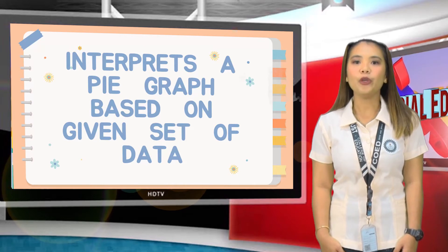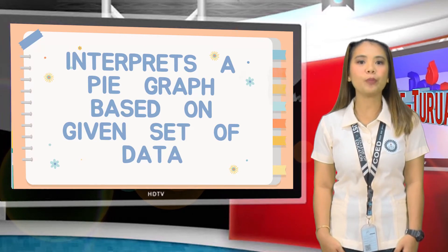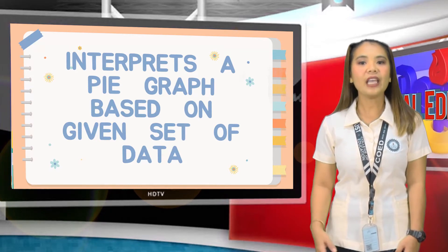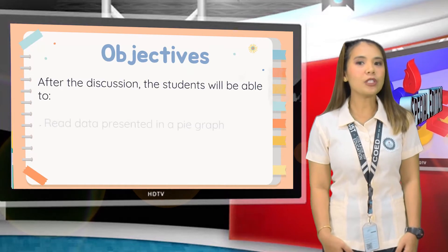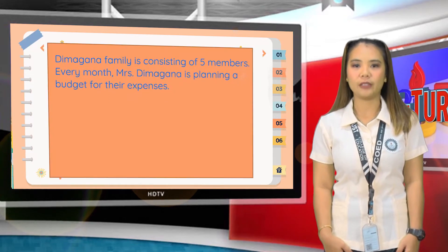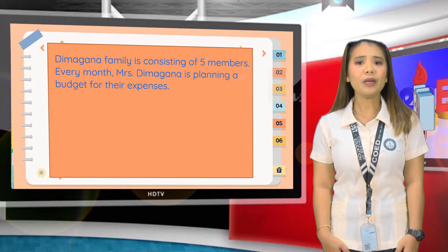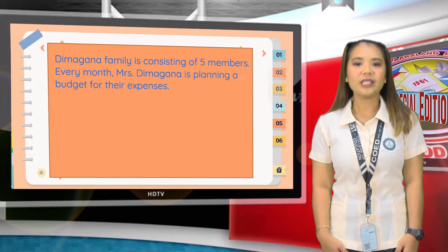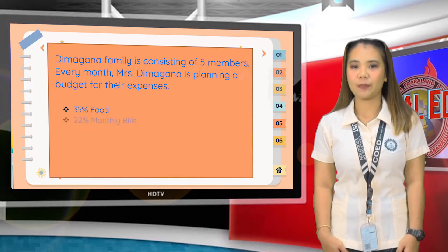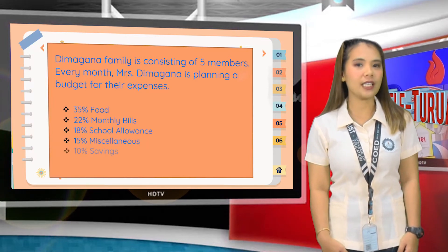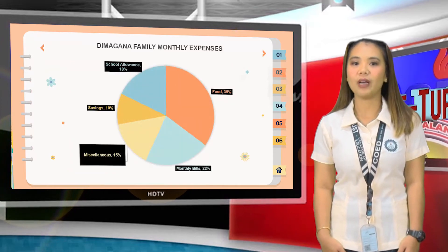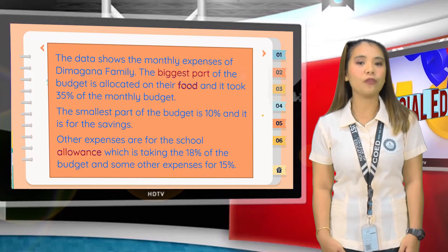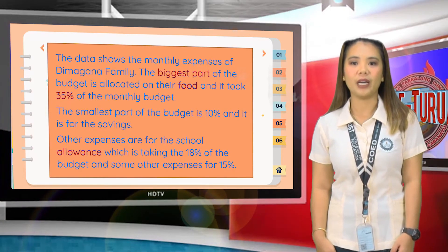You must know how to analyze data and solve word problems involving data presented in a pie graph. I have here a problem, and I will show you how to analyze and interpret a pie chart. The Dimagana family is consisting of five members. Every month, Mrs. Dimagana is planning a budget for their expenses. The data shows the monthly expenses of the Dimagana family. The biggest part of the budget is allocated on their food, and it took 35% of the monthly budget.